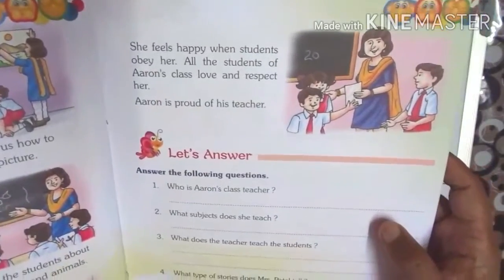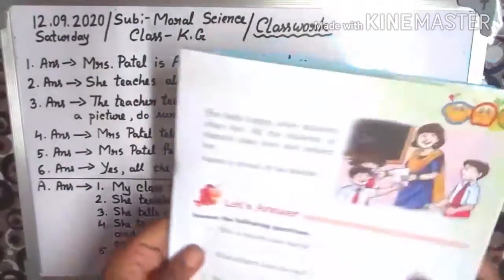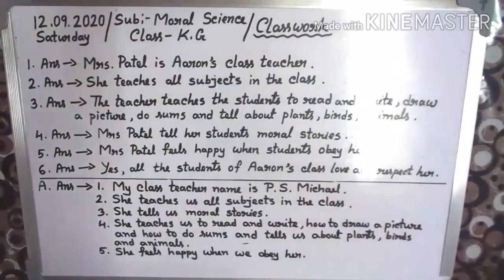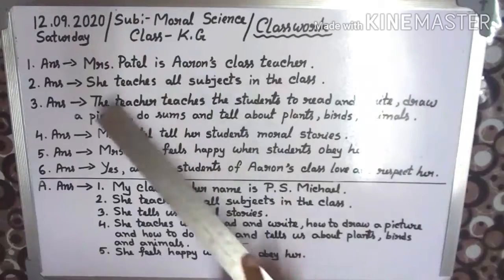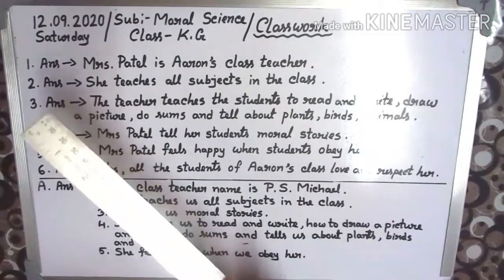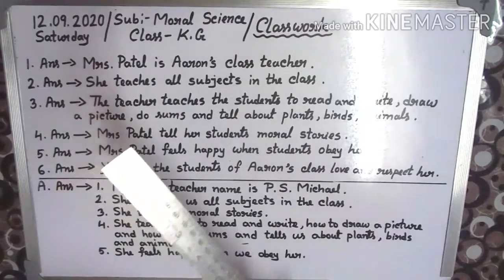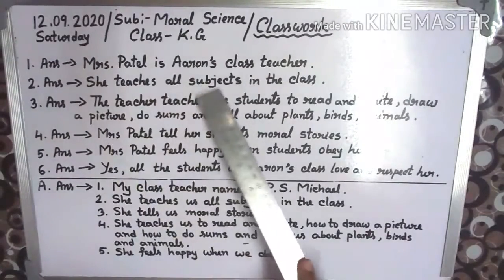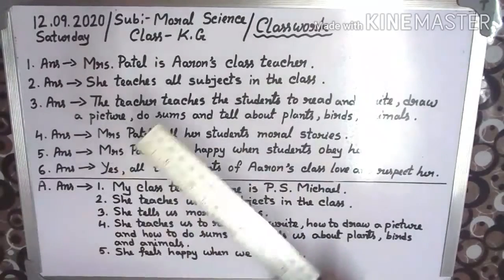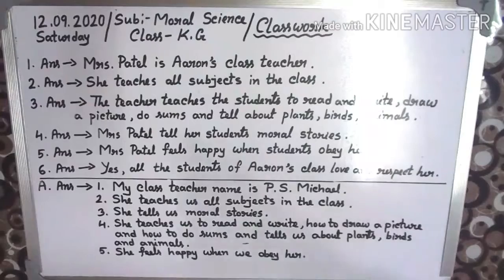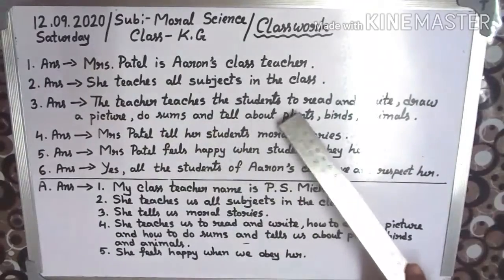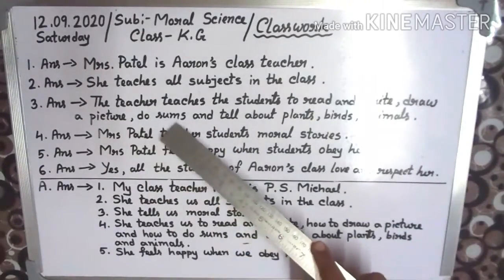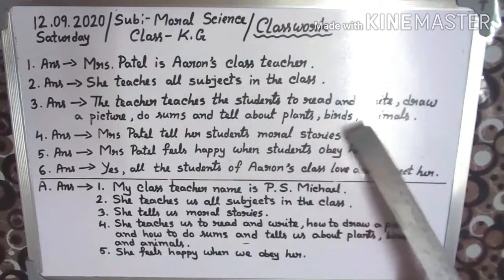Answer the following questions. Number 1: Who is Aaron's class teacher? Answer: Mrs. Patel is Aaron's class teacher. Number 2: What subjects does she teach? She teaches all subjects in the class. Number 3: What does the teacher teach the students? The teacher teaches the students to read and write, draw a picture, do sums, and tells about plants, birds and bees.